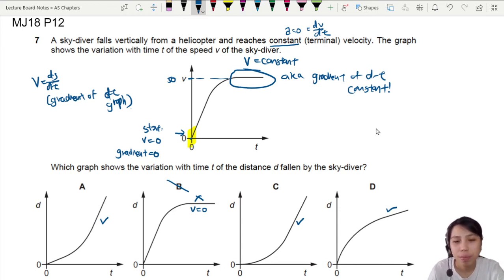Look at this starting point. You start off by having zero. You start from zero, right? So at the start, velocity is zero, which means all our graphs, the gradient should start off to be zero. There's only one graph that satisfied this condition. And that is graph C. If I draw a tangent, it's going to be a flat line. Here, the gradient is zero.